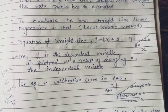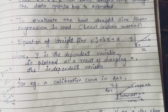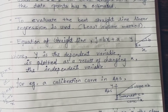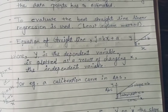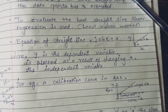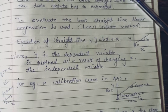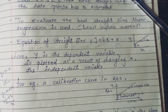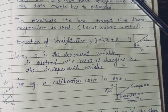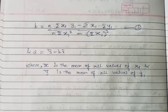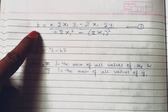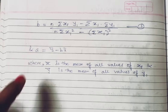Here y depends on x but x does not depend on y. Therefore y is called the dependent variable and x is called the independent variable. For example, for the regression line obtained from an atomic absorption spectrophotometer experiment, absorption is on the y-axis, concentration is on the x-axis, slope is b, and intercept is a.